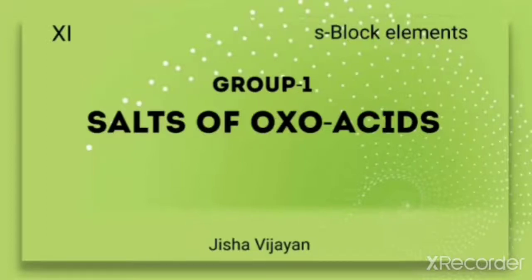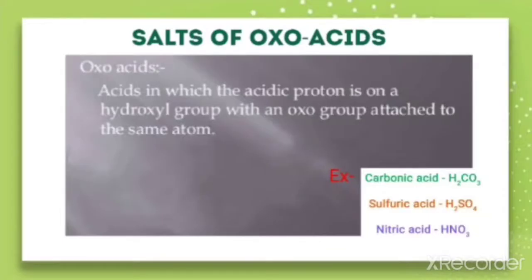Hello students. In this video we are going to discuss about the salts of oxoacids of Group 1. First let us define what is an oxoacid. Oxoacids are the acids in which the acidic proton is on a hydroxyl group with an oxo group attached to the same atom. Examples of oxoacids are carbonic acid, sulphuric acid, and nitric acid.